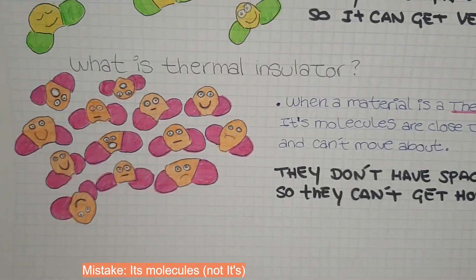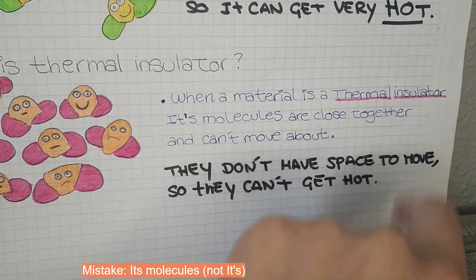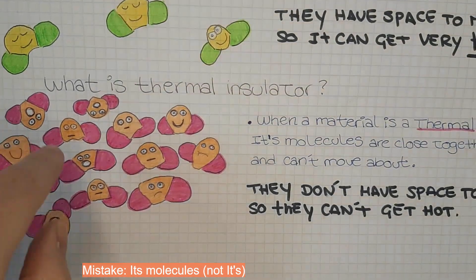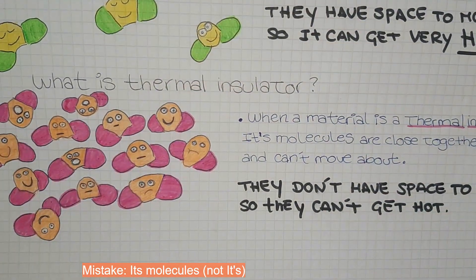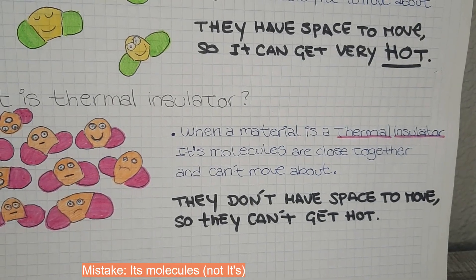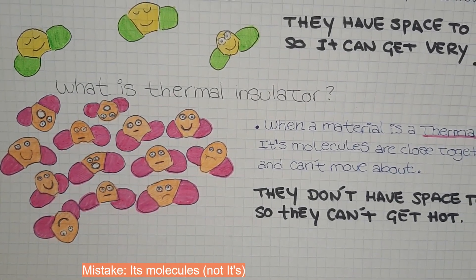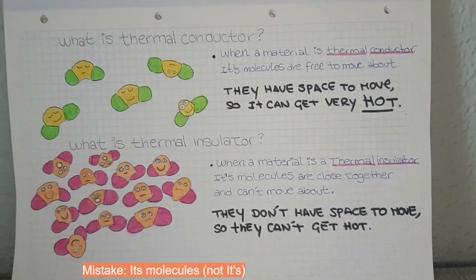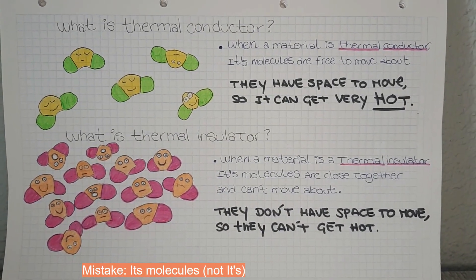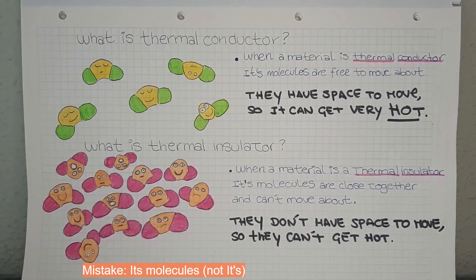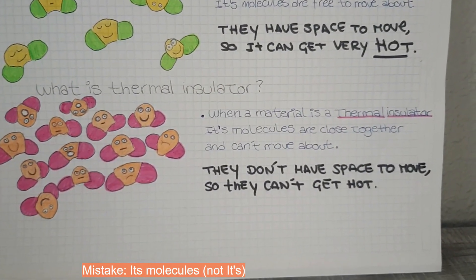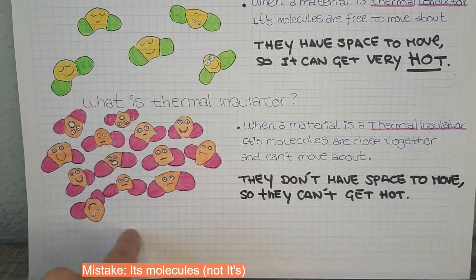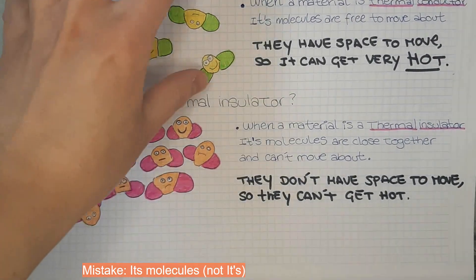And what is a thermal insulator? The opposite. When a material is a thermal insulator, its molecules are close together, and they can't move because they are very, very close — they don't have space. So, remember: some materials can be thermal conductors because they have space and can get very hot, and some materials are thermal insulators because they don't have space to move.